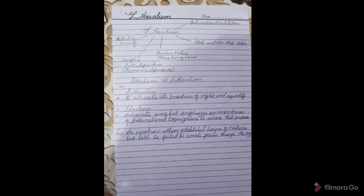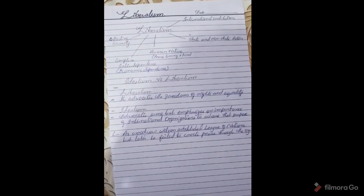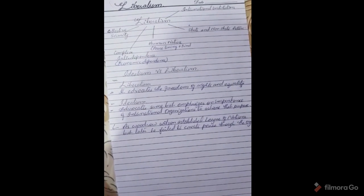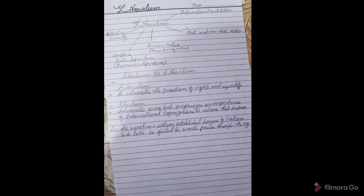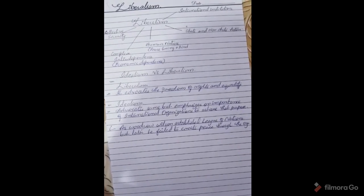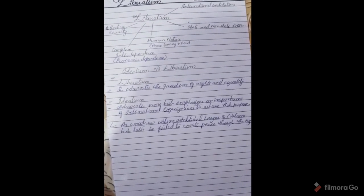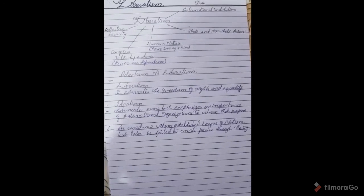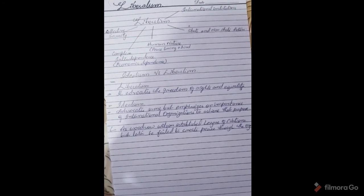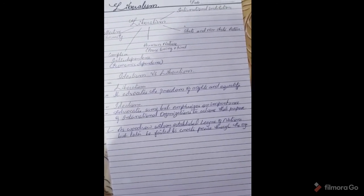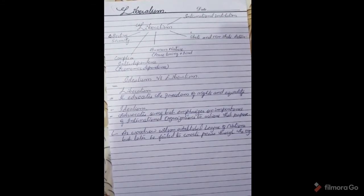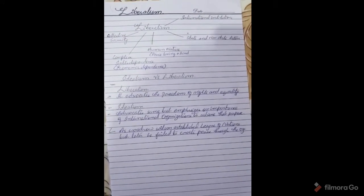The principles of liberalism include: establish international institutions and create peace; both state and non-state actors are important. Human nature is peace-loving and kind — not aggressive or selfish — which is the complete opposite of realism. Liberalism also calls for complex interdependence, meaning economic dependency — countries should cooperate to grow their economies. Finally, there should be a collective security system where every country supports others in matters of security.